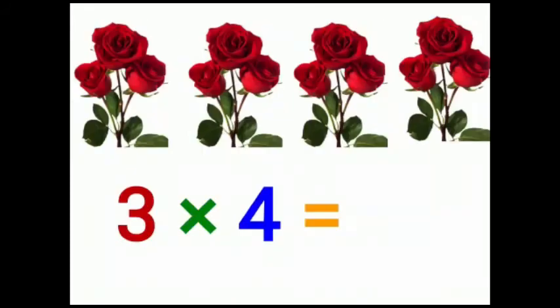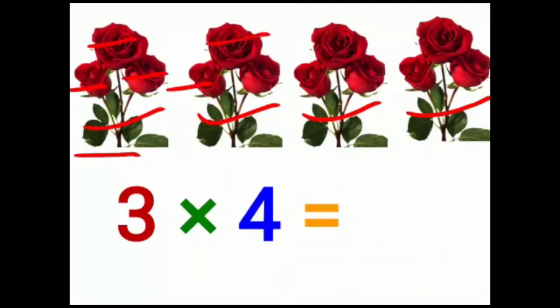Children, these are roses. There are 3 roses in one bunch. There are 1, 2, 3, 4 bunches. How many roses do 4 bunches have? 1, 2, 3, 4, 5, 6, 7, 8, 9, 10, 11, 12 roses.